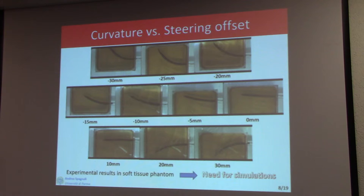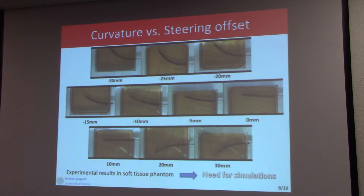Most experimental results are related to soft tissue phantoms. We use gelatin, which has mechanical properties consistent with biological tissues, to perform experiments. Here we have a variety of curvatures achieved by changing the offset value, with curvature in one direction or the other — and one case with no offset. The task is to simulate this experimentally observed behavior.